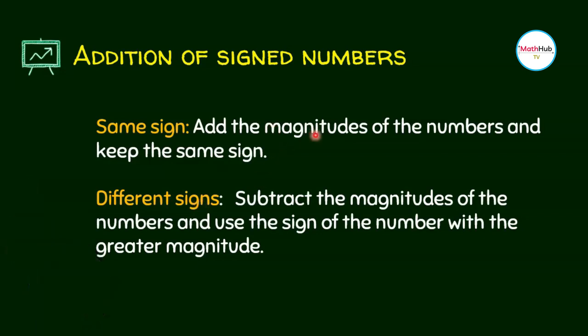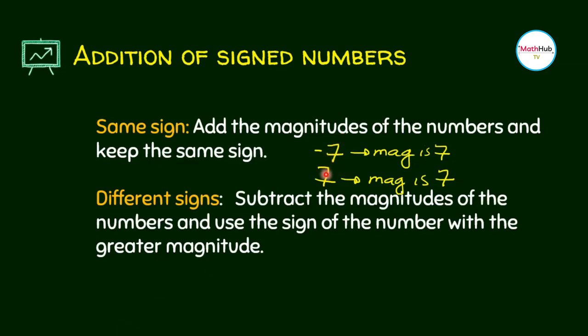Let's look at this term over here: magnitude. What is the meaning of the word magnitude of numbers? If we have negative 7, the magnitude is 7. If it's 7, the magnitude is 7 as well. Meaning to say, you just look at the number and ignore its sign.